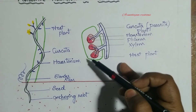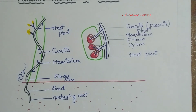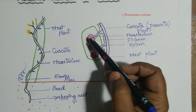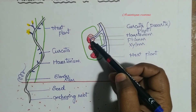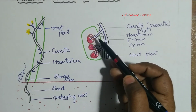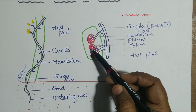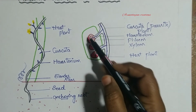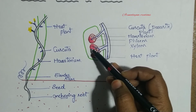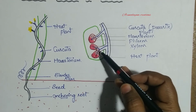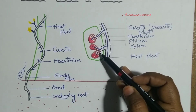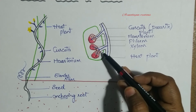The vascular tissue of the host plant contains xylem and phloem. Plants have xylem and phloem, so the haustoria penetrate into these tissues to absorb nutrients and water from the host plant.